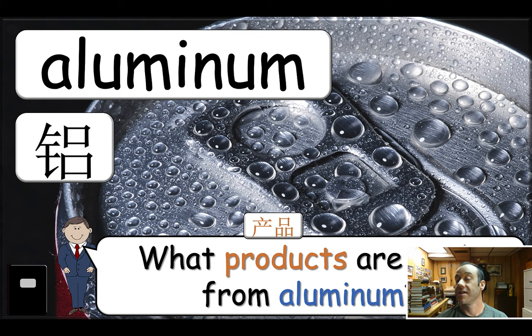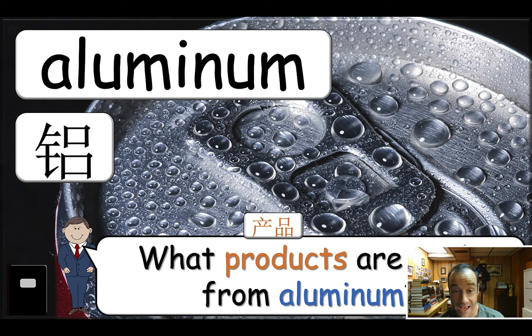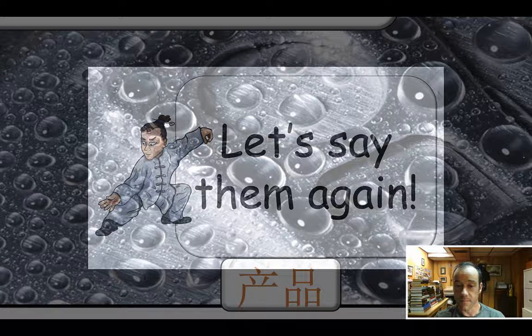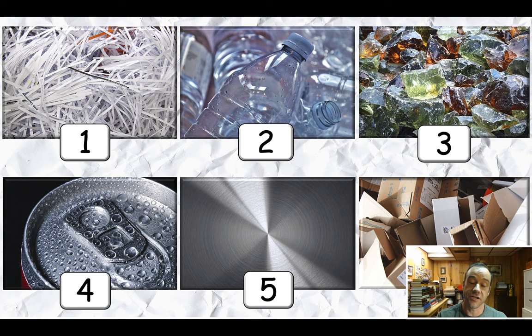Aluminum is already a hard word, so I don't want to introduce both pronunciations and confuse them. If you're British and want to change this to aluminium, or if you grew up saying it that way, then change it — you can edit this PowerPoint. I'm just leaving it as the American English way; that's the way I was raised to say it. Let's say them again: paper, plastic, glass, aluminum, steel, cardboard. Great job.